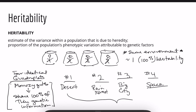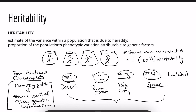Even though genetic material is the same, we have four entirely different environments. As a result, we would assume the heritability value is very low — potentially close to zero — because all four share the same genes but have entirely different environments.